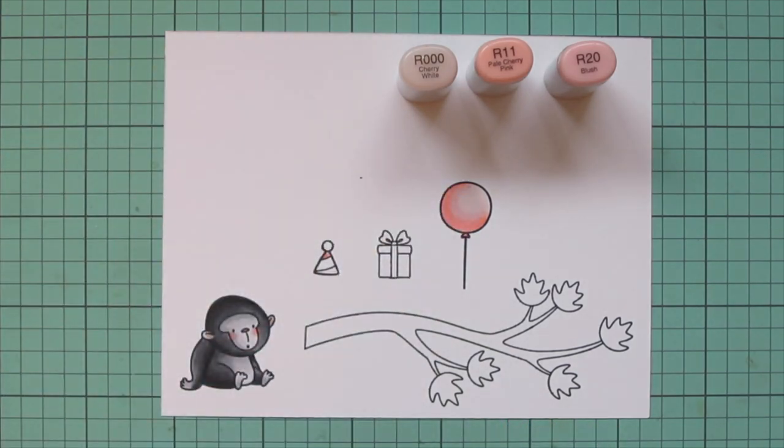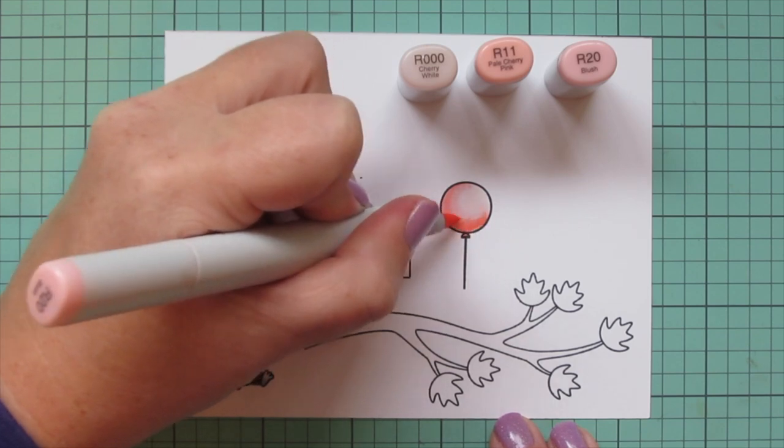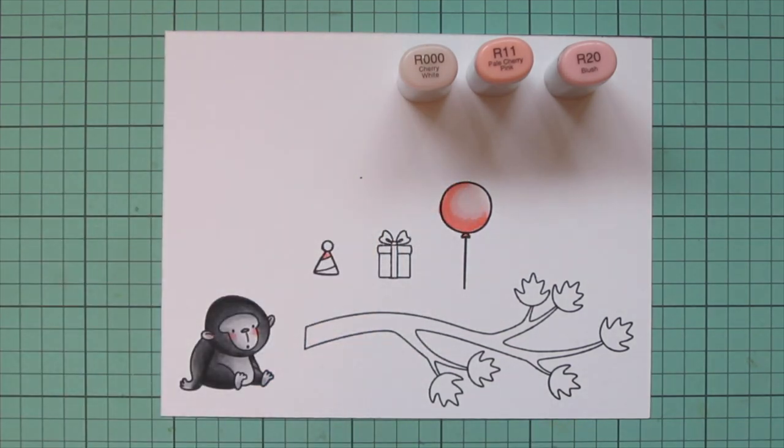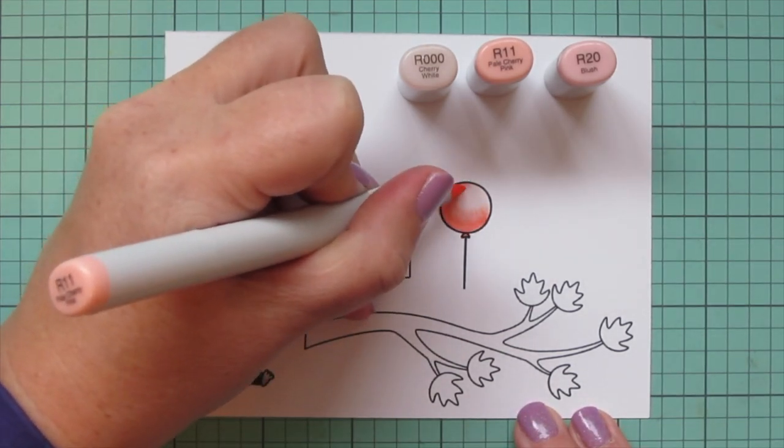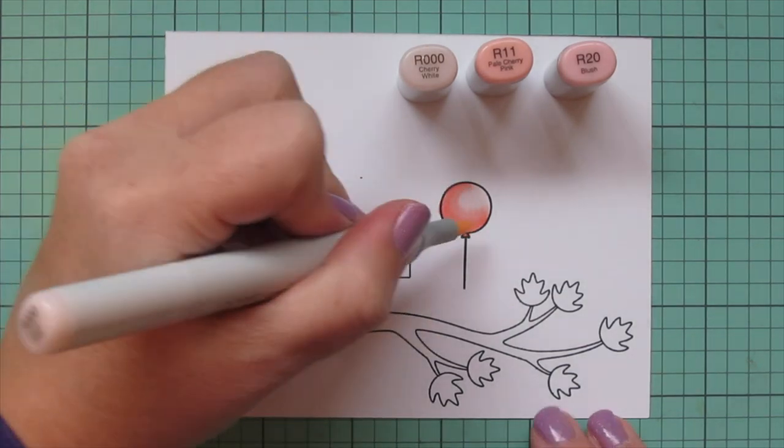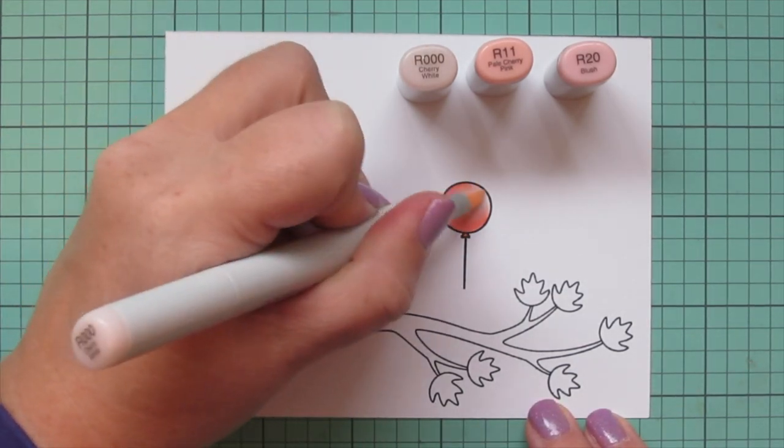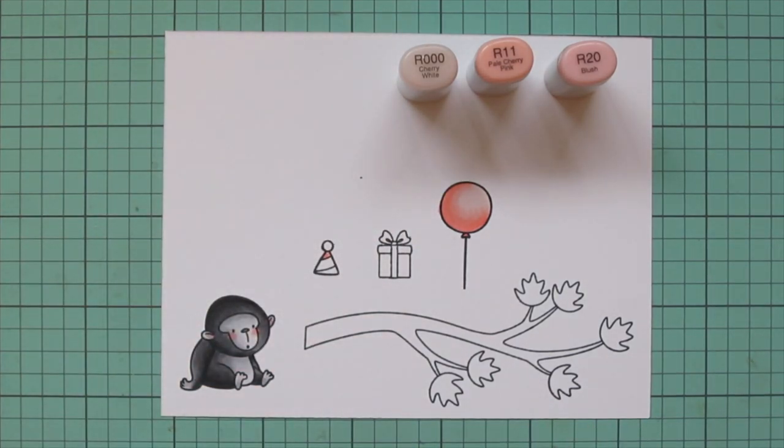Now that R000 does have a lot of colorless blender in it so it really pushes back the other shades. So I am going to do a second layer on that as well just to smooth everything out and give it that depth of color that I'm looking for.